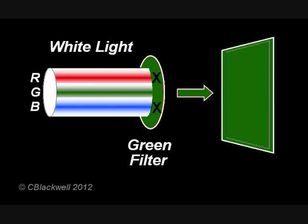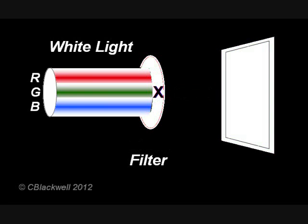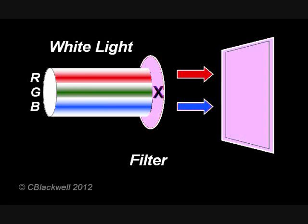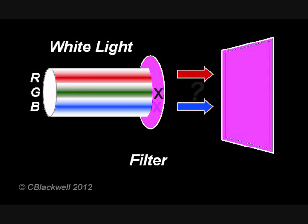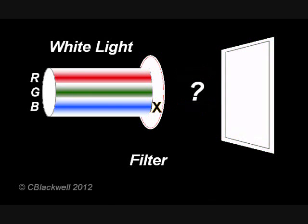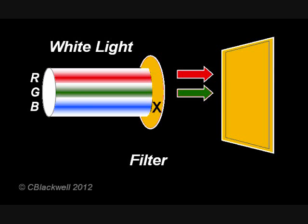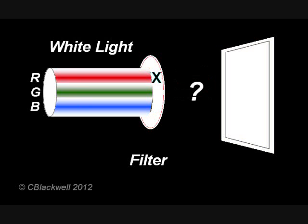Likewise, you can have a filter that blocks only one color, letting the other two go through. For example, if you subtract only green, that leaves red and blue, which we saw before combines to make magenta. Now can you predict what happens with a filter that blocks only the blue light? It lets green and red through, which add to make yellow. And if you subtract red, you are left with blue and green, which combine to make cyan.